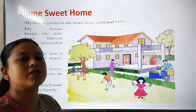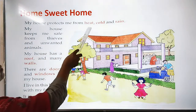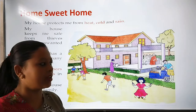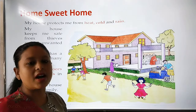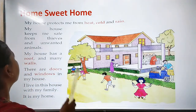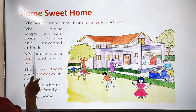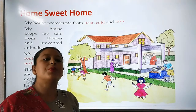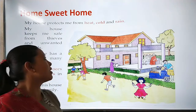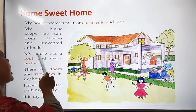Today we are going to study about home. My house protects me from heat, cold, and rain. So why do we need a house? We need a house because it protects us from heat, cold, and rain. My house also keeps me safe from thieves and unwanted animals. So your house protects you from heat, rain, cold, unwanted animals, and thieves.